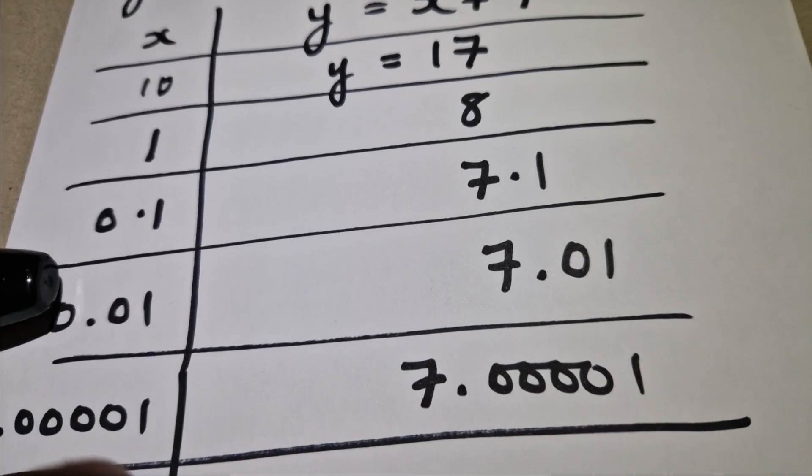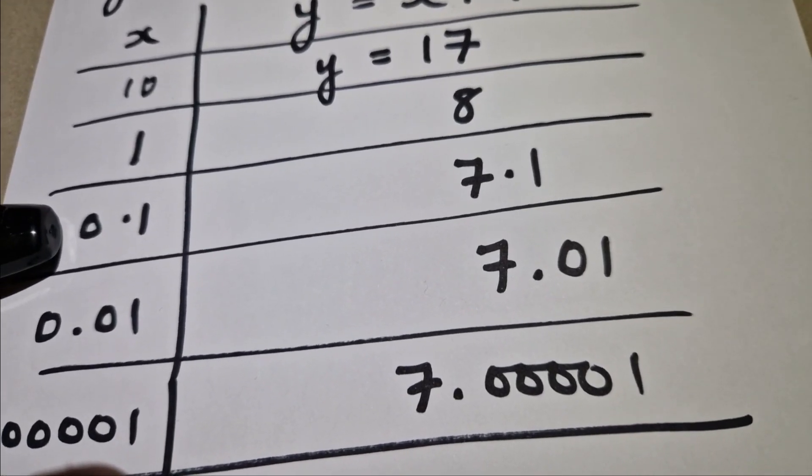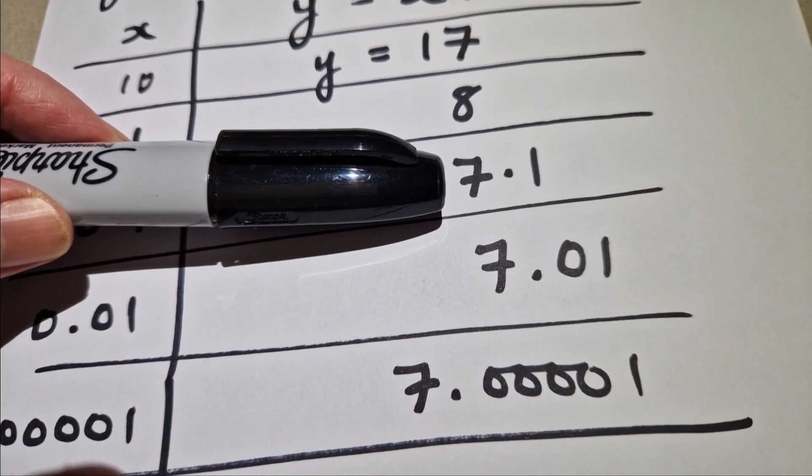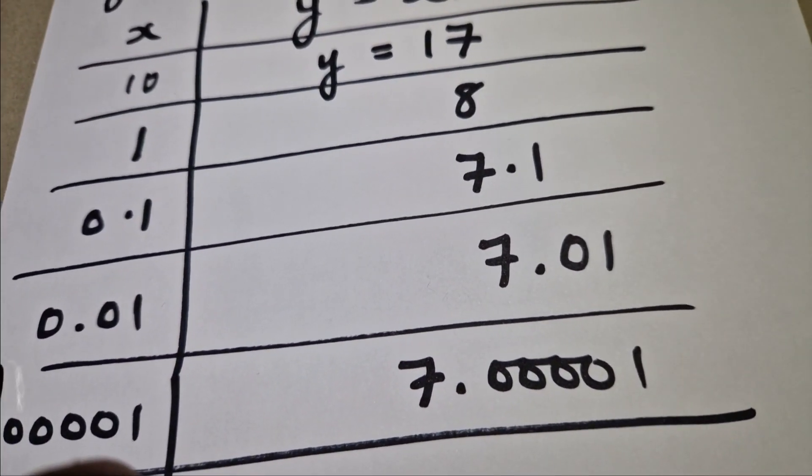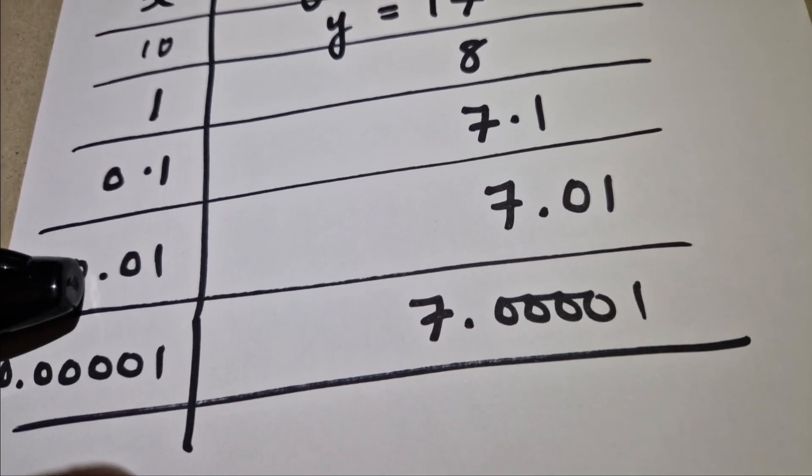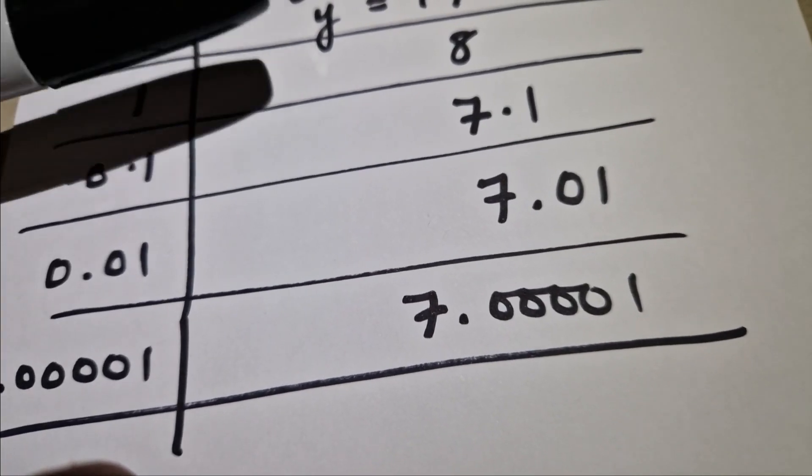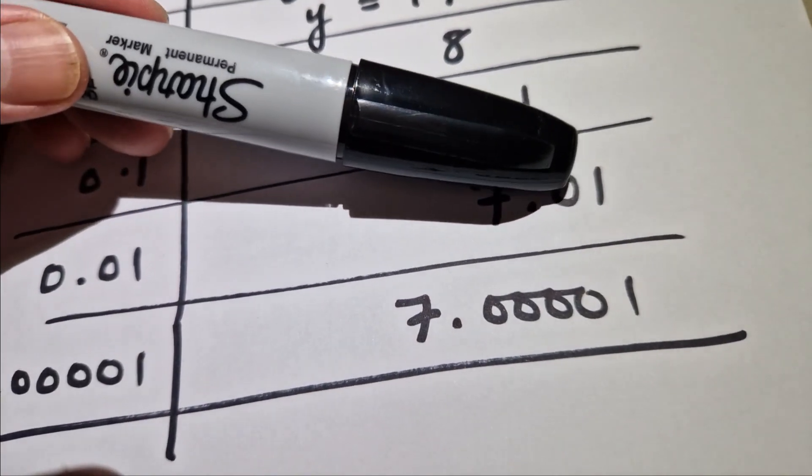If we make our value of x even lower, so 0.1, 0.1 plus 7 is 7.1. We can work out the value for y when x is 0.01, and that's going to give us a value of 7.01.